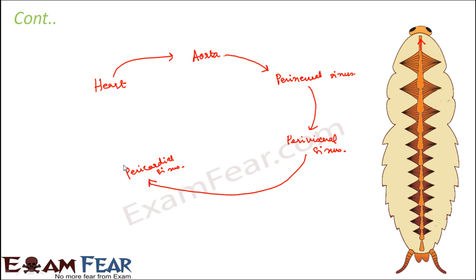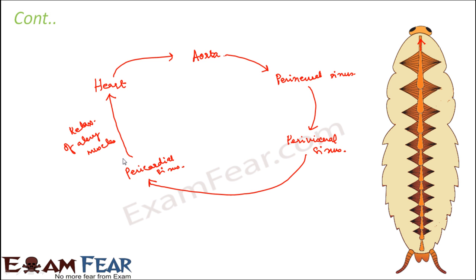The pericardial sinus contains the heart, so blood enters the heart by the relaxation of the alary muscles. Through the ostia — the pores — blood enters the heart. From the heart it is pumped to the aorta, then to the perineural sinus, then to the perivisceral sinus, and into the pericardial sinus, continuing the cycle.